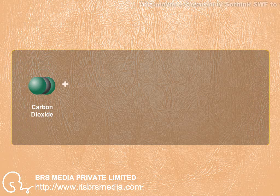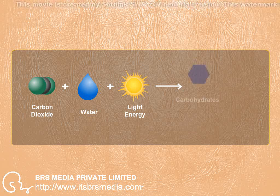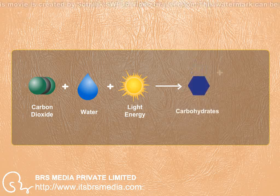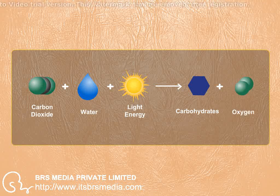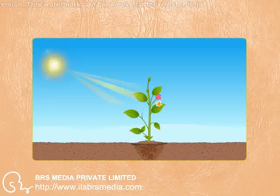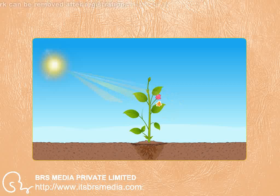During photosynthesis, oxygen, which is essential for survival of living beings, is released. Chlorophyll-containing cells of leaves in presence of sunlight use carbon dioxide and water to synthesize carbohydrates. This process can be expressed as an equation. Carbohydrates produced during the process of photosynthesis get converted into starch.